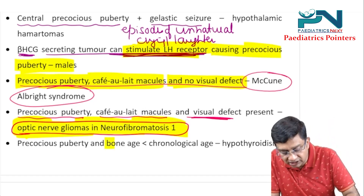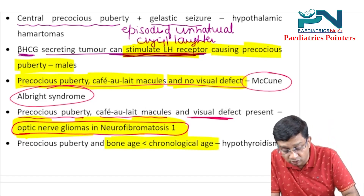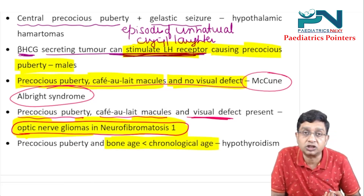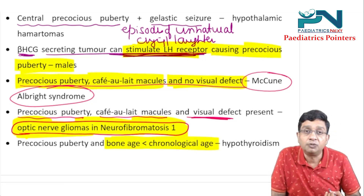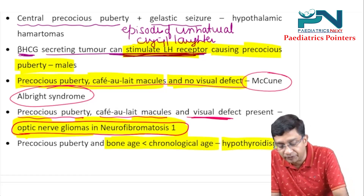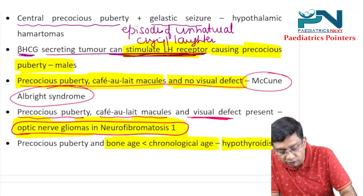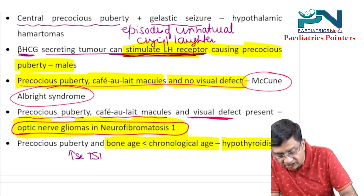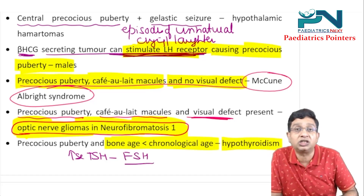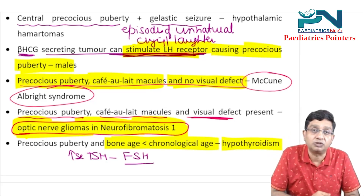If the question states precocious puberty but bone age is less than chronological age — normally in precocious puberty bone age should be more than chronological age — you should think of hypothyroidism. In hypothyroidism, due to increased TSH, this can stimulate FSH receptors, causing precocious puberty.